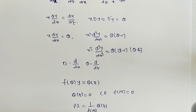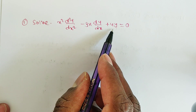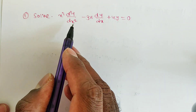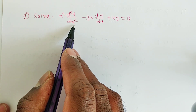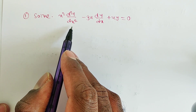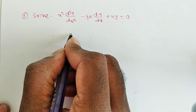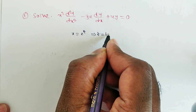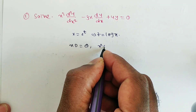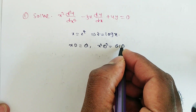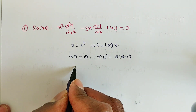First problem: Solve x² · d²y/dx² - 3x · dy/dx + 4y = 0. The coefficients are variable, so this is a Cauchy-Euler equation. We apply x = eᶻ, so z = log x. We substitute x·d = θ and x²·d² = θ(θ-1), where θ is differentiation with respect to z and d is differentiation with respect to x.